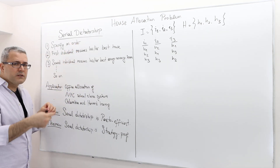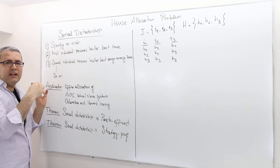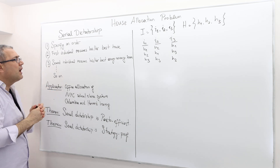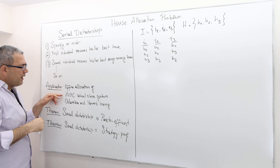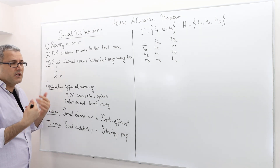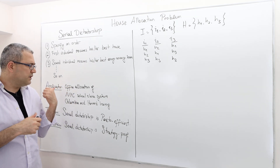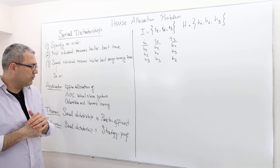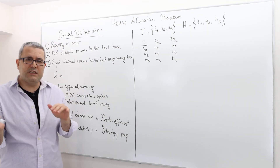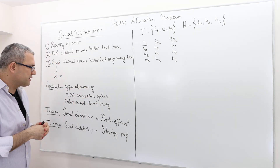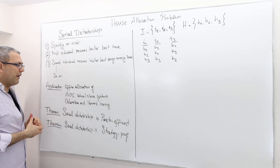The choice of an order doesn't really constrain the mechanism — whatever the choice, you can apply this rule and get, obviously, a different outcome. So the choice of an order is going to influence the outcome, but you can choose any order you like. New York City's school choice system was, at least at one point, using this system. Harvard University's housing system was also using serial dictatorship — at least when I was there in 2015, they were randomly selecting an order and then PhD students and visitors were choosing their housing. So there are a bunch of applications out there.